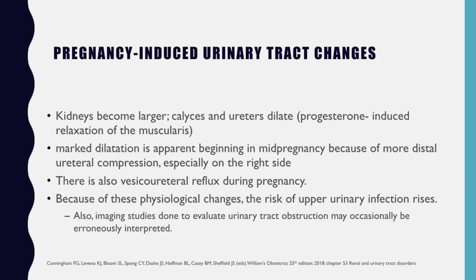First, let's review some pregnancy-induced urinary tract changes. During pregnancy, kidneys become larger and the calices and the ureters dilate, mainly because of progesterone-induced relaxation of the muscularis. There is also marked dilatation apparent beginning in mid-pregnancy because of more distal ureteral compression, especially on the right side. There is also vesico-ureteral reflux during pregnancy. Because of these physiological changes, the risk of upper urinary infection is increased, and imaging studies done to evaluate urinary tract obstruction may occasionally be erroneously interpreted.